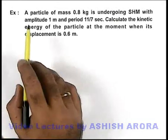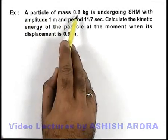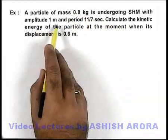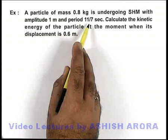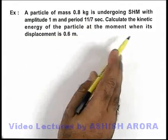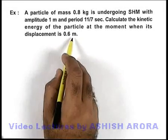In this example, we are given that a particle of mass 0.8 kg is undergoing SHM with amplitude 1 m and period 11/7 seconds. We are required to calculate the kinetic energy of the particle at the moment when its displacement is 0.6 m.